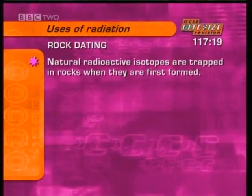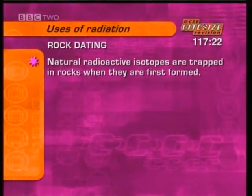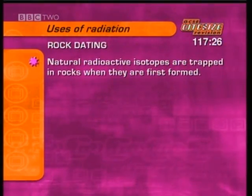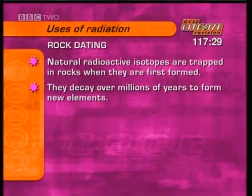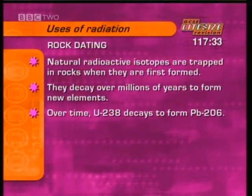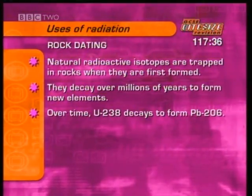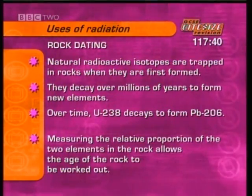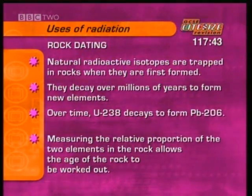Similar techniques can be used to find the age of rocks. Natural radioactive isotopes were trapped in the rocks when they first formed and have been decaying over millions of years to form new elements. For example, over time uranium-238 decays to form lead-206. By measuring the relative proportion of the two elements present in the rock, the age of the rock can be worked out.